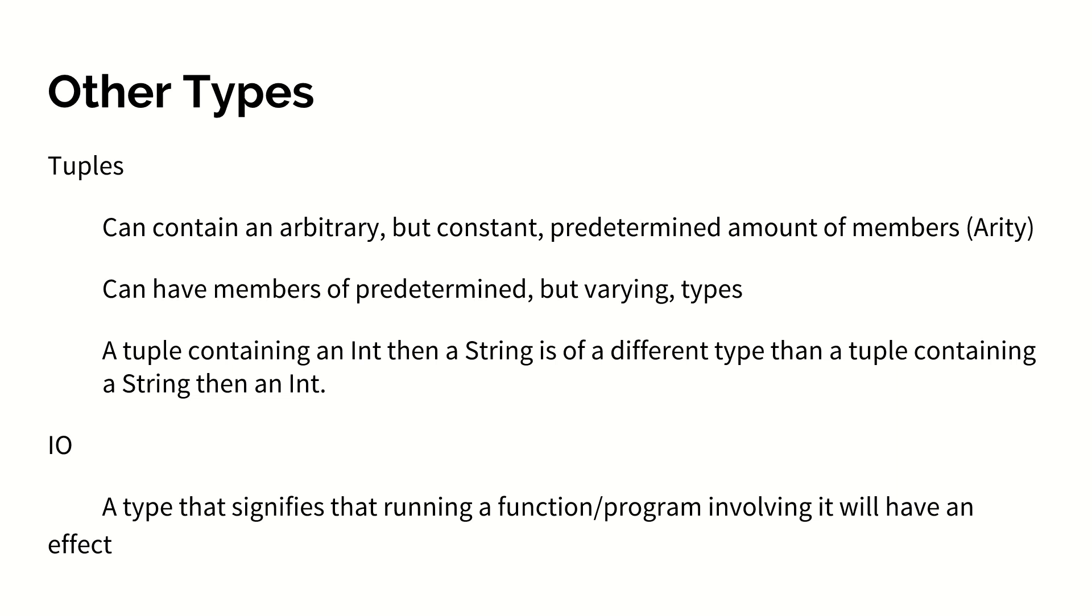Tuples are like lists in that they can contain an arbitrary amount of members. However, that arbitrary amount of members must remain constant. A tuple can hold three things, but it must always have three things in it. The number of members of a tuple is predetermined. This predetermined amount of members is called arity. Also, the members of a tuple can be of different types. So you can have a tuple that contains an int, then a string, then an integer. But that same tuple may never contain three integers. Tuples are similar to lists in that the things they contain determine their true type. A tuple containing three strings is of a different type than a tuple containing three integers is of a different type than a tuple that contains an int, a string, and a string.